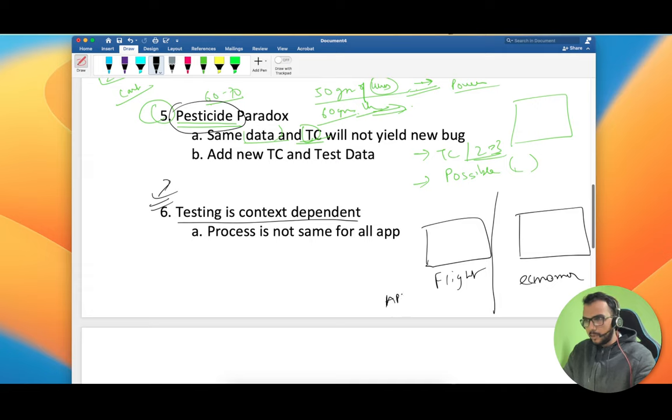For the tourism industry, we will focus more on the API part because let's say we are MakeMyTrip. Each and every request, the result which we are showing on our page is getting generated from Indigo, different other websites, Air India. In that case it makes more sense to go towards API testing rather than UI testing.